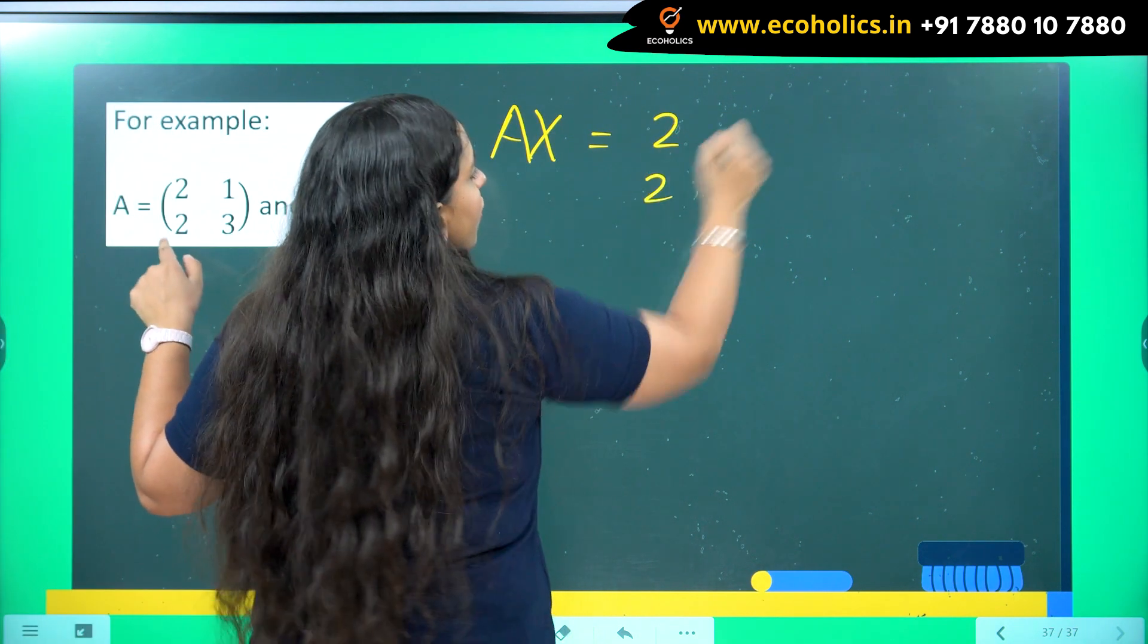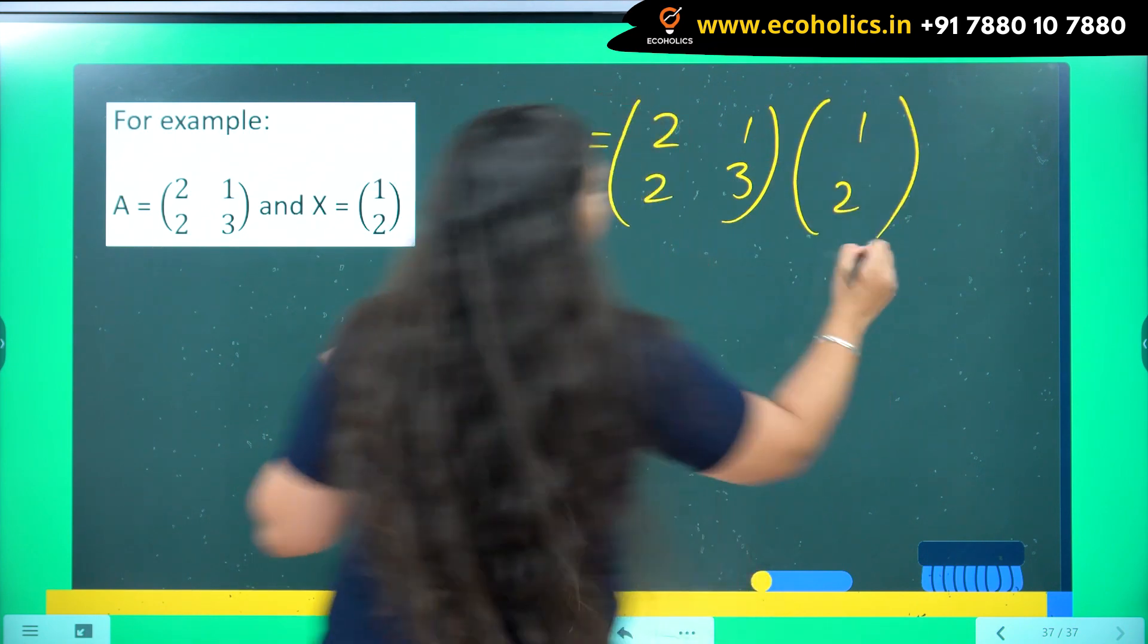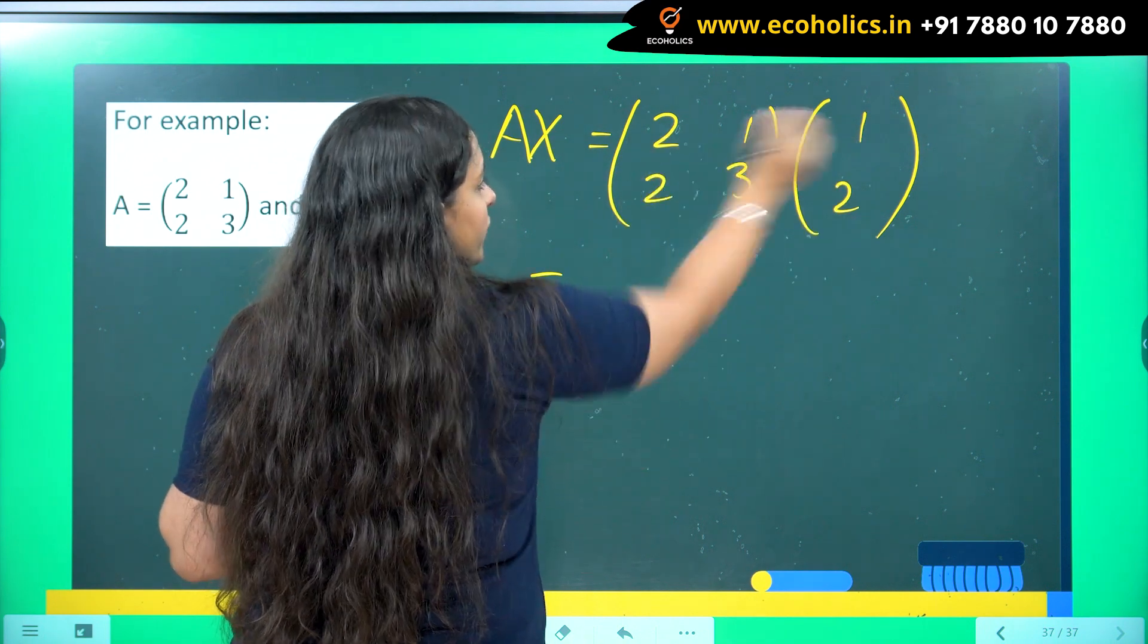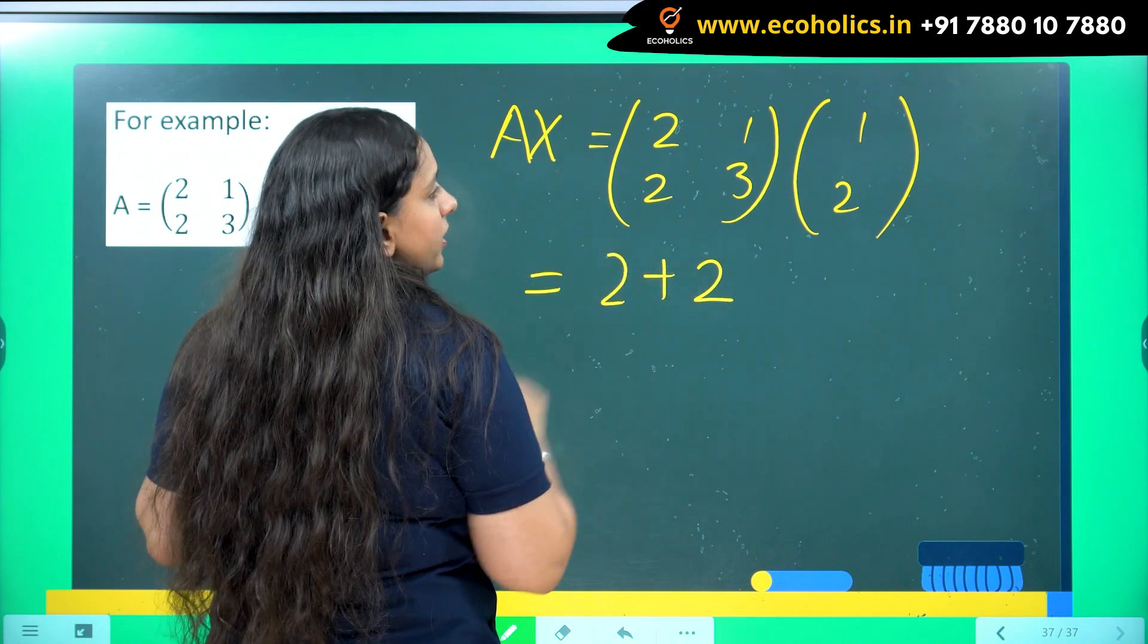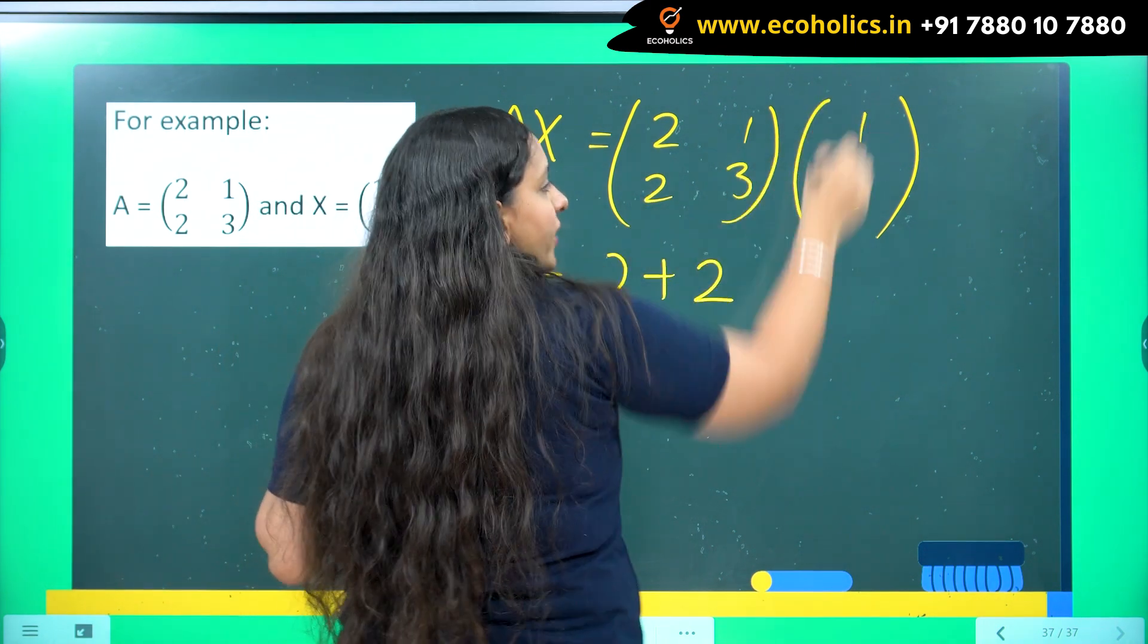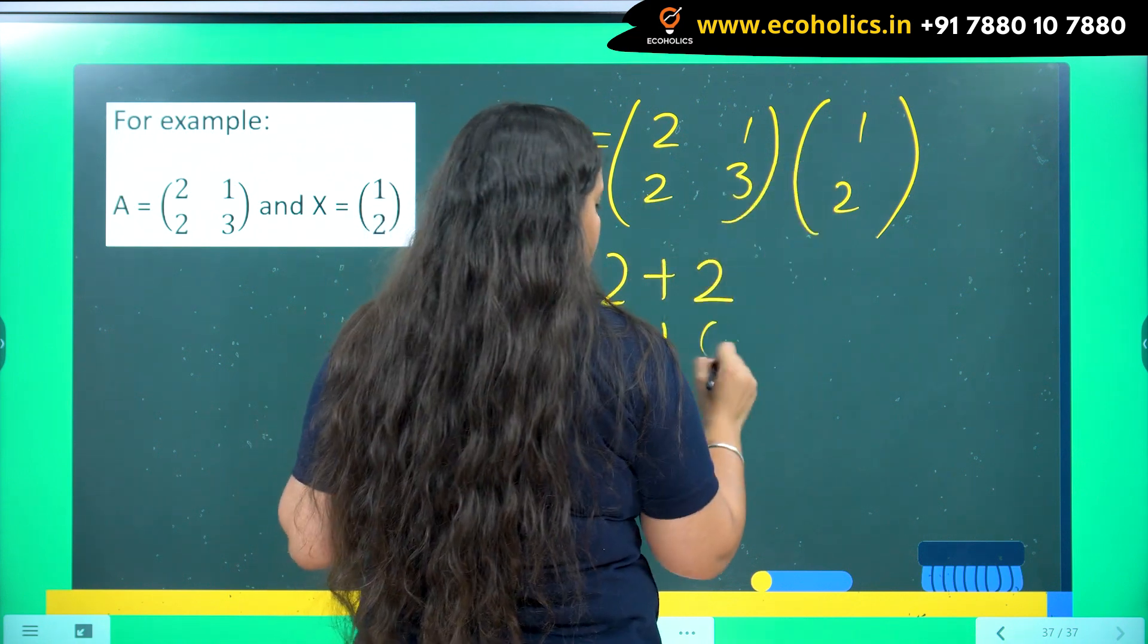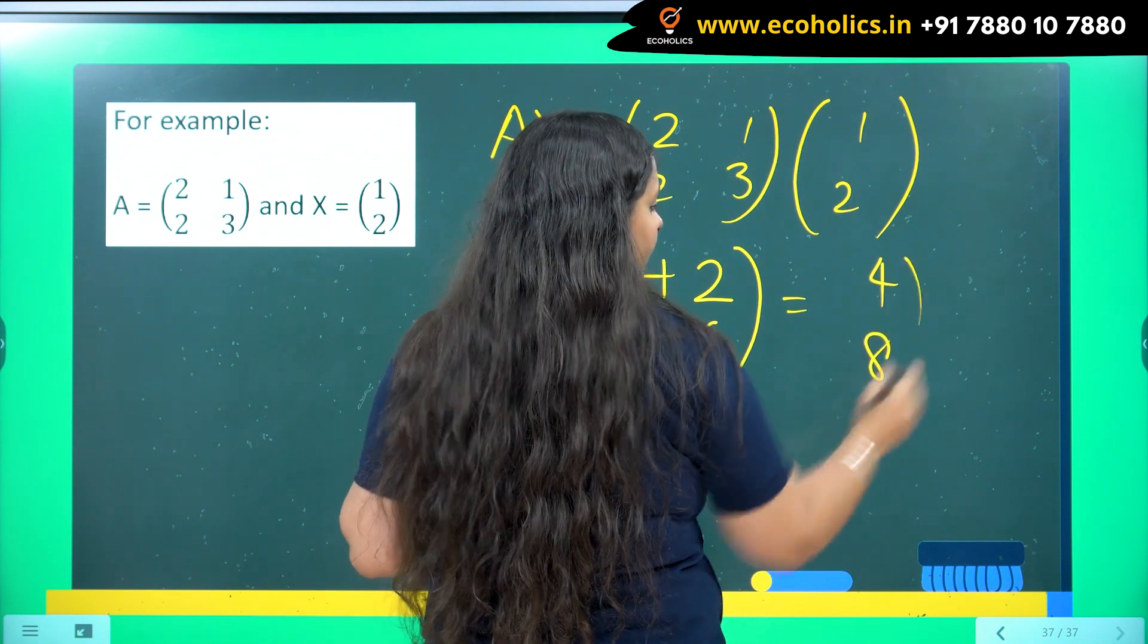So A is 2, 2, 1, 3 and X is 1, 2. So if I try doing this, what will I get? First row and first column. So 2 into 1 is 2 plus 1 into 2 is 2 over here. Then what I am going to have? First row, sorry, second row and first column. So 2 into 1, 2 plus 3 into 2, 6. So what I have got? I have got the answer as 4 and 8.